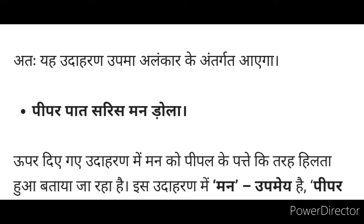Let's understand this with an example. In the example given, the mind (man) is being described as swaying like a leaf (patta) of a plant. Here two different objects are being compared: one is the leaf of a plant, and the other is the mind. The mind is shown to be as restless and swaying as a leaf. The common quality between the swaying of the leaf and the restlessness of the mind is what forms the comparison in this Upma Alankar.